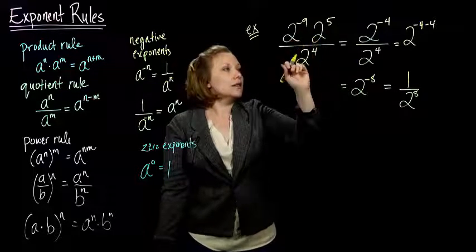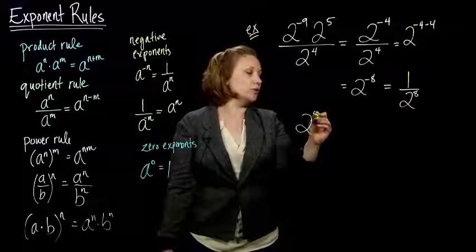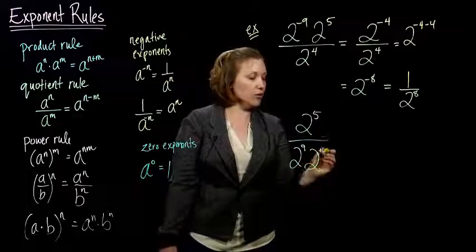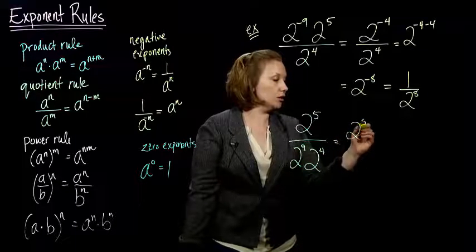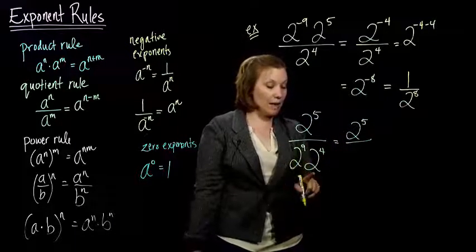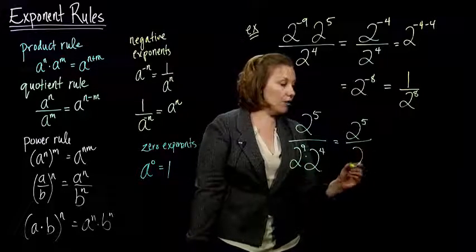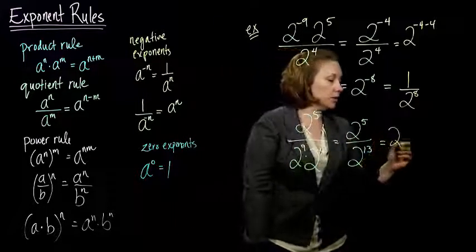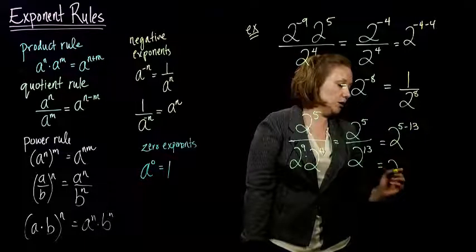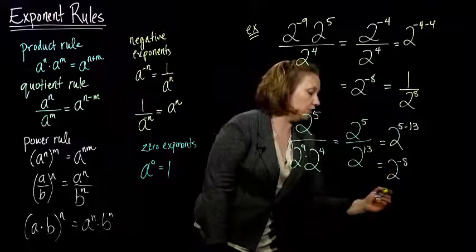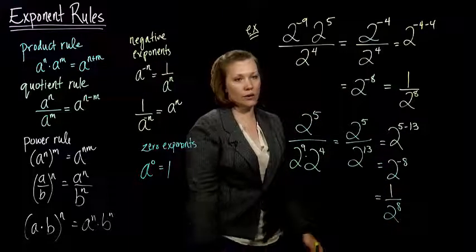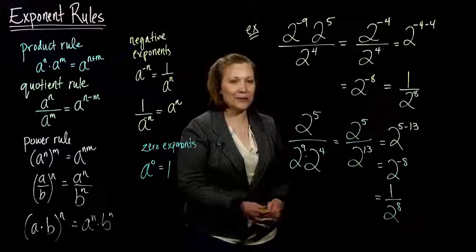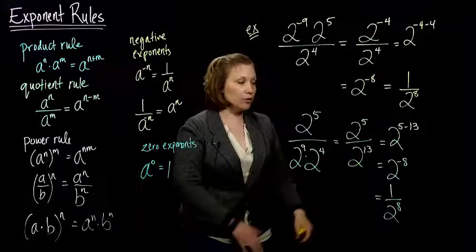You could do this a different way. Sometimes people don't like to deal with the negative exponents, so they'll deal with them in the very first step of the problem. If I wanted to get rid of this negative exponent very first step, I would take this 2 to the negative 9th and put it into the bottom of my fraction. I'd end up with 2 to the 5th all over 2 to the positive 9, because it crossed the fraction bar, went into the bottom, times 2 to the 4th. Now I can use my product rule. Same base, different powers being multiplied together. 9 plus 4 makes 13. Now I can use the quotient rule. This becomes 2 to the 5th minus 13, which is 2 to the negative 8.